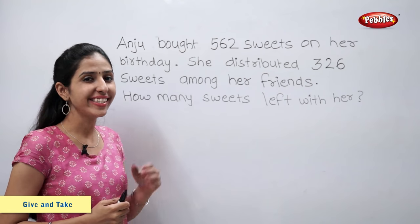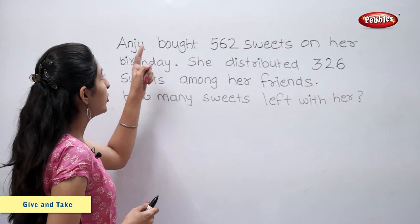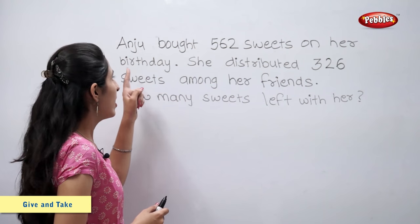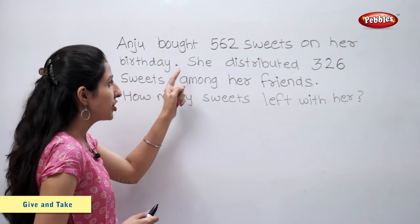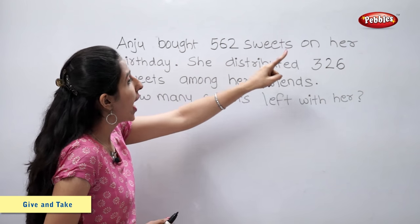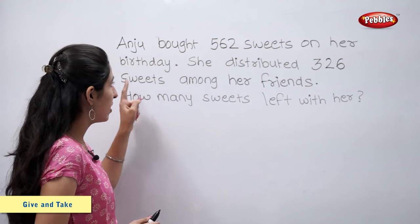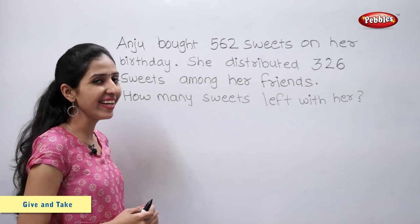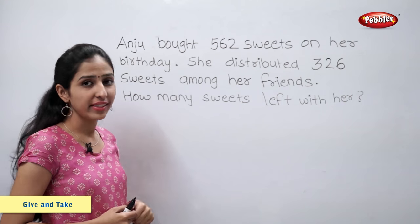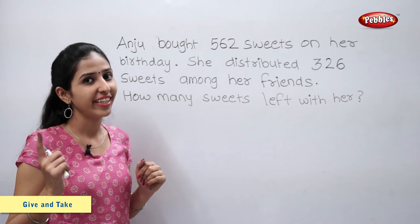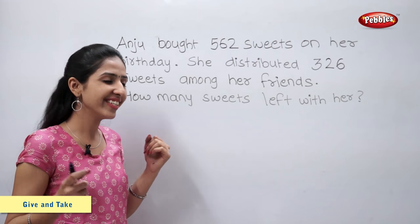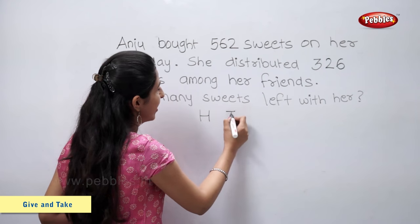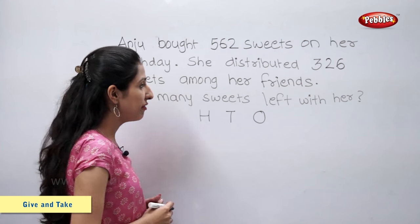Now, let us look at this example. Anju bought 562 sweets on her birthday. She distributed 326 sweets among her friends. How many sweets are left with her? Students, let us solve this sum using hundreds, tens and ones. So, let us write hundreds, tens and ones.